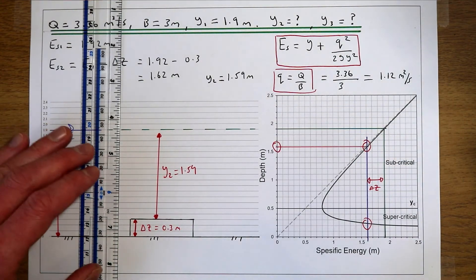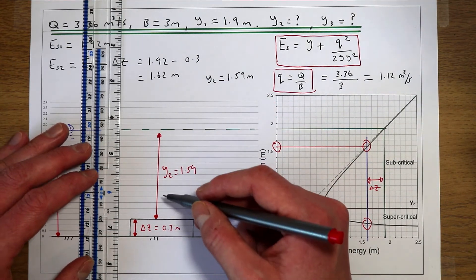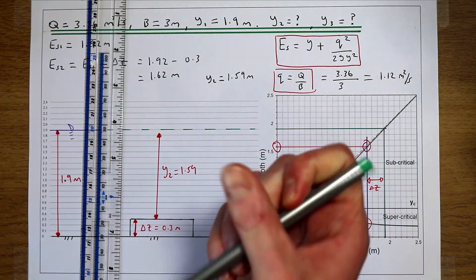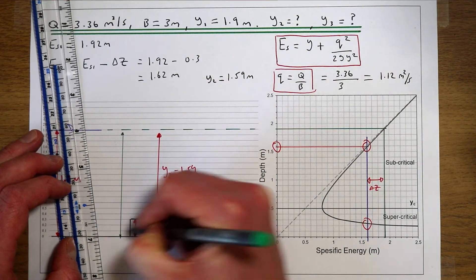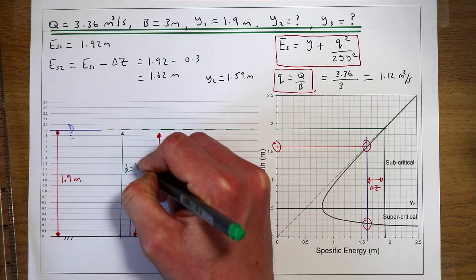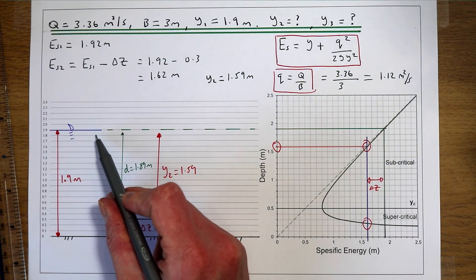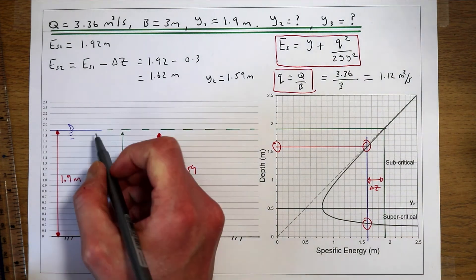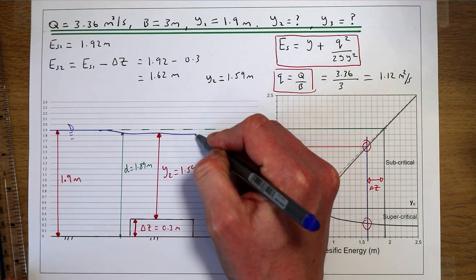Considering the total flow depth above the base of the channel, this depth is 1.89 metres. We've had a very small decrease in the water surface because of this step. As the water goes over the step, it slightly decreases in flow depth by about 0.1 metres.